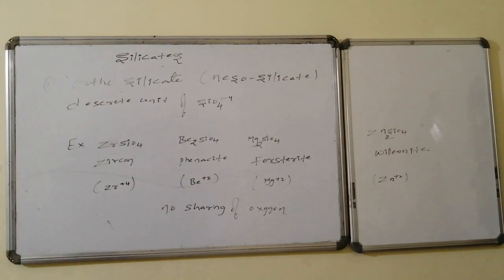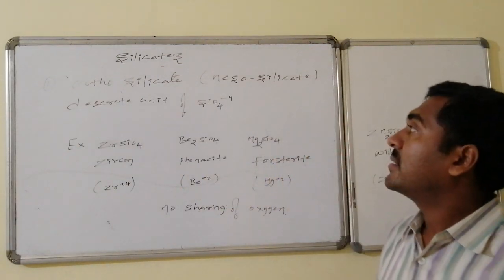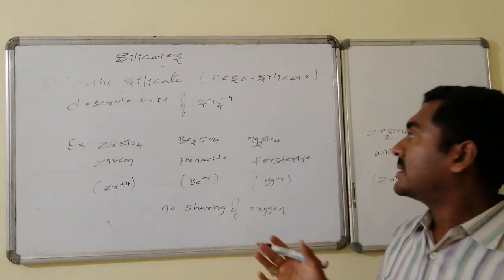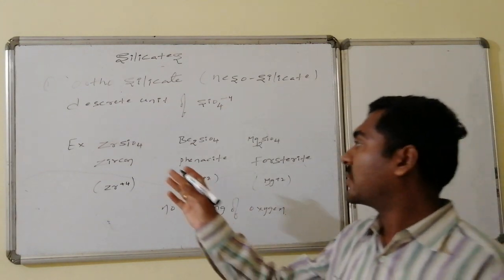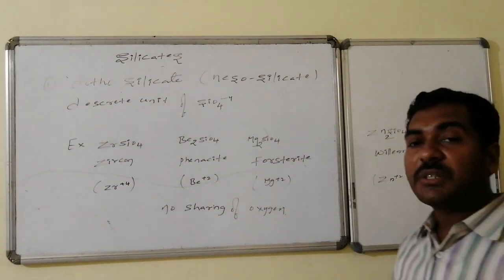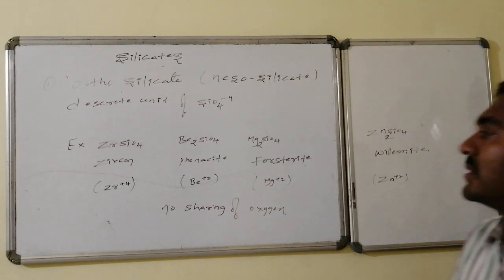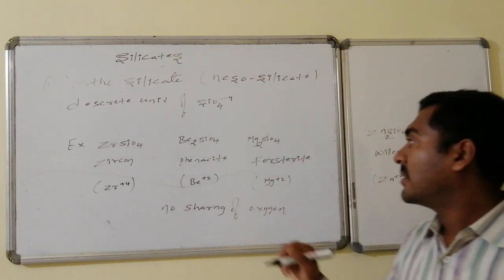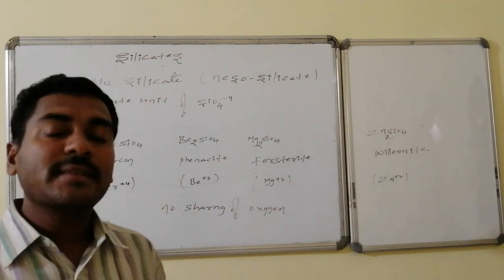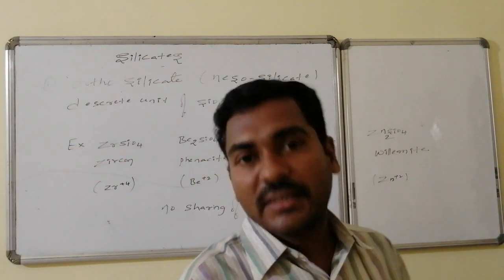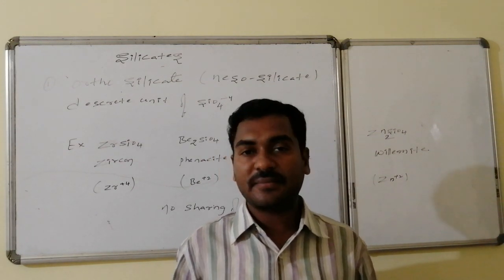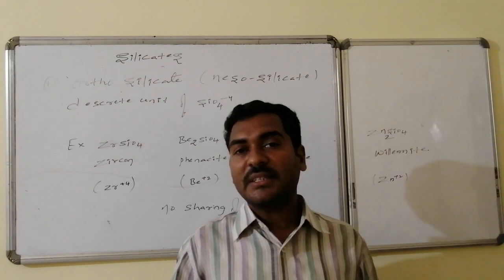The first variety of silicates is orthosilicate, also known as nesosilicate. It consists of discrete SiO4 4- units. Examples include zircon (ZrSiO4), phenacite (Be2SiO4), forsterite (Mg2SiO4), and willemite (Zn2SiO4). In this variety, there is no sharing of oxygen atoms between SiO4 units. This is the most primary and fundamental type of silicate.